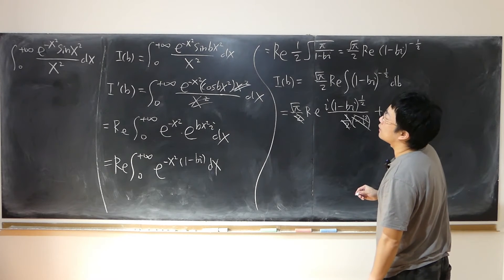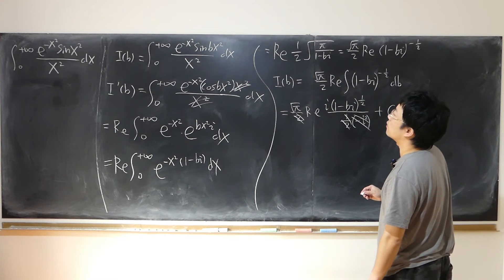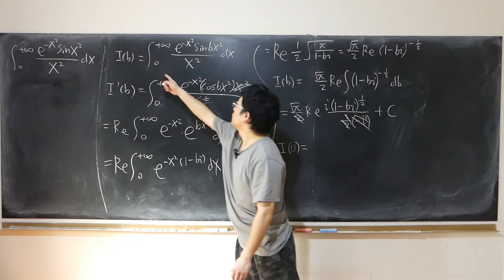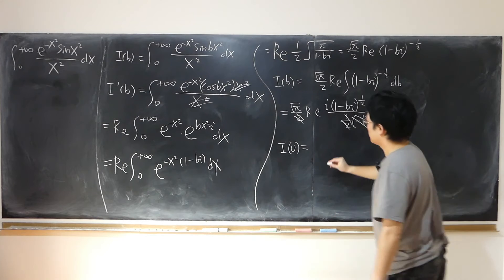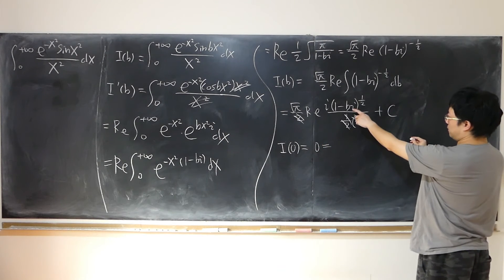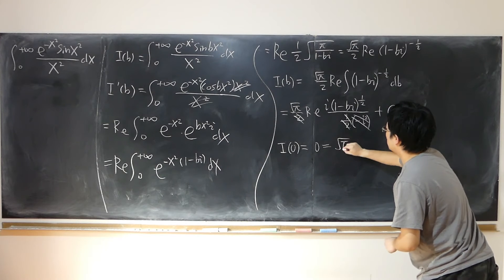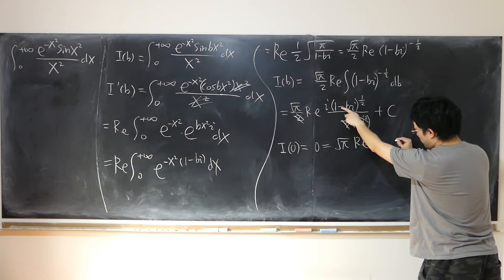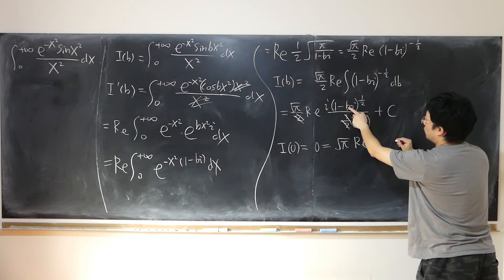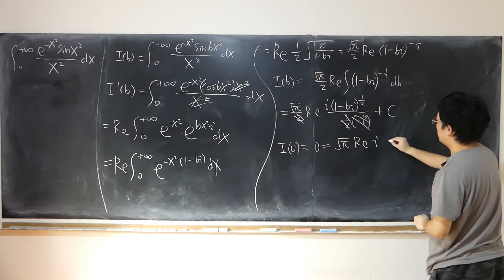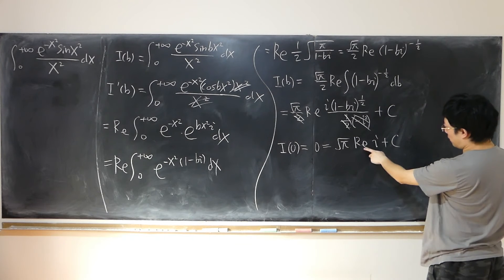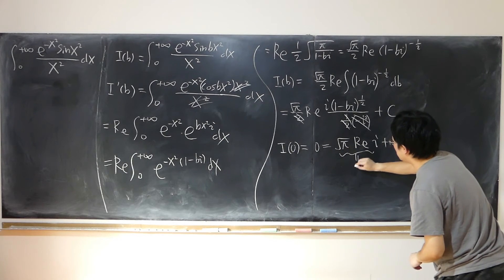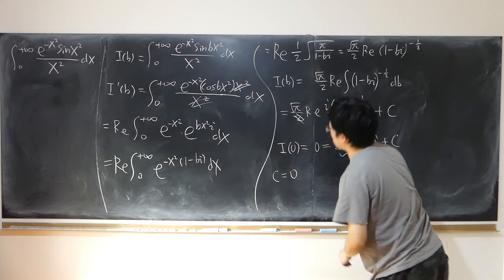Now let's find I(0) to determine the value of C. When b equals 0, the integrand is zero, so I(0) equals 0. At the same time, working out the formula: (√π) times the real part of i times (1 minus 0·i) to the power of one-half plus C equals (√π) times the real part of i times 1, which is i. The real part of i is just 0, so this becomes 0, meaning C equals 0.